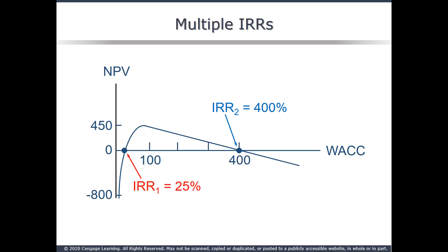Here's a look at the results of our pavilion project. At very low discount rates, the present value of both cash flows 1 and 2 are low, so CF0 dominates and NPV is negative. In between, the discount rate hits CF2 harder than CF1, so the NPV is positive. Result: two IRRs — 25% and 400%. 25% is possible; 400% is clearly not.